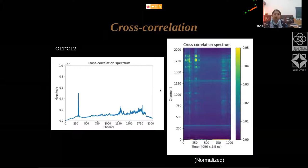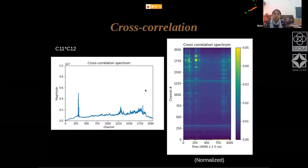What happens when we cross-correlate data from two antennas versus what you get in autocorrelation tells us about the properties of RFI that are correlated and those that are not correlated between the two antennas.